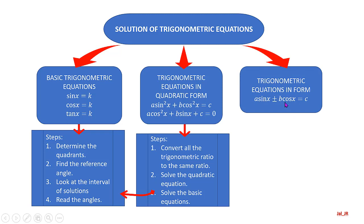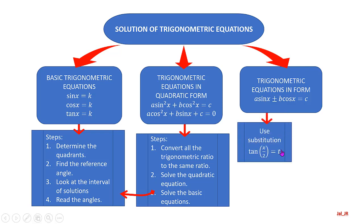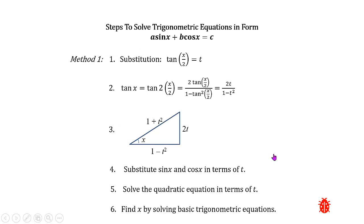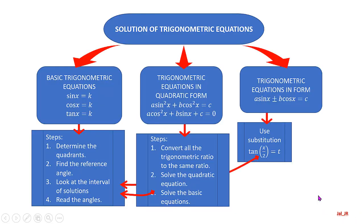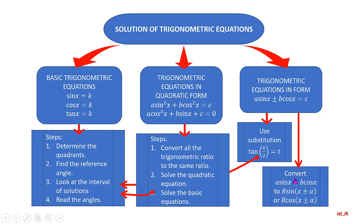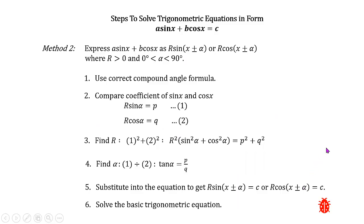The third type of equations is of the form a·sin(x) ± b·cos(x) = c. There are two methods to solve it. The first method is by using substitution, t = tan(x/2) — we will look at that in another video. The second method is by converting a·sin(x) ± b·cos(x) to r·sin(x ± α) or r·cos(x ± α).